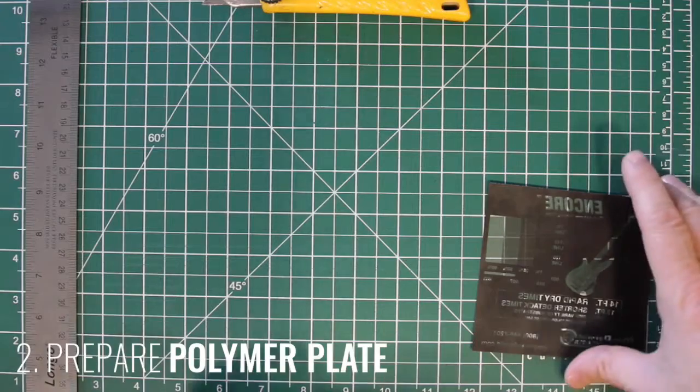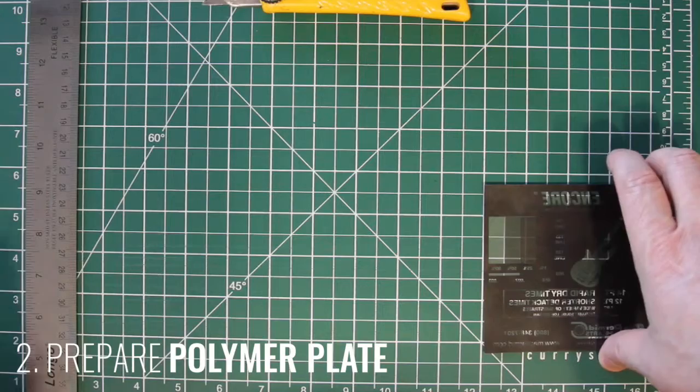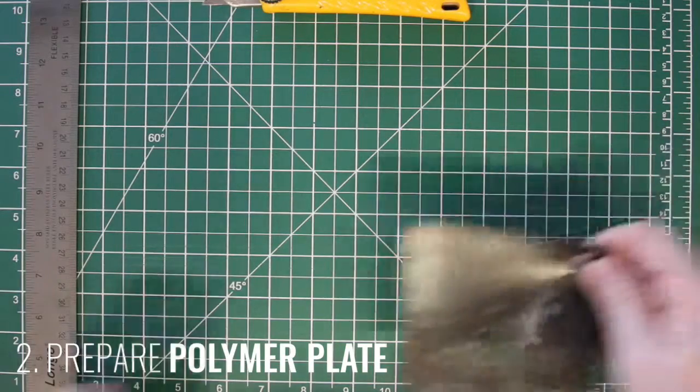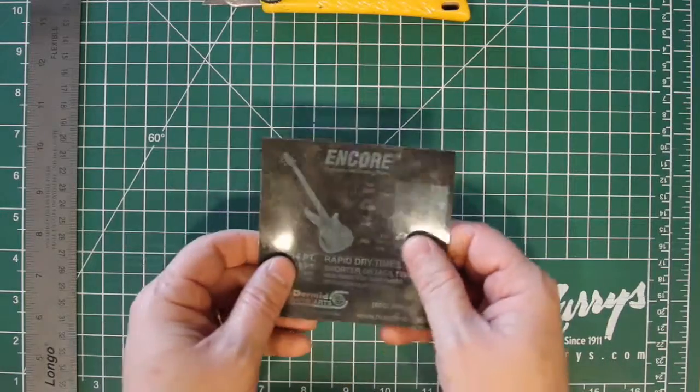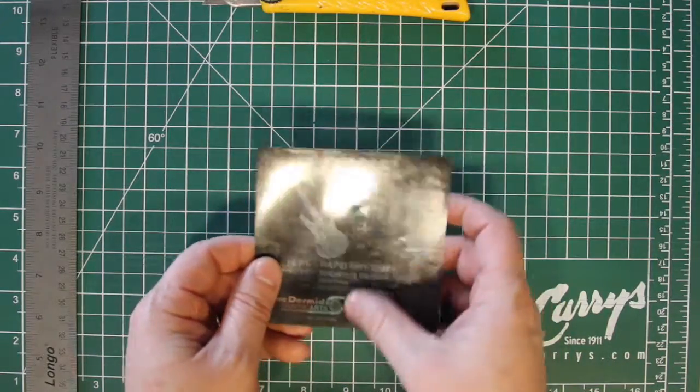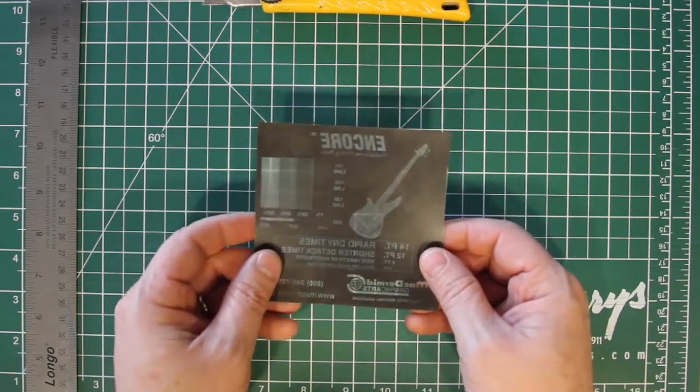So now we're ready to prep our polymer plate material for exposure in the polymer machine. What I have here is an ortho film that was produced at an output service bureau and you can see with the ortho film this is what we're going to use to expose the polymer plate.